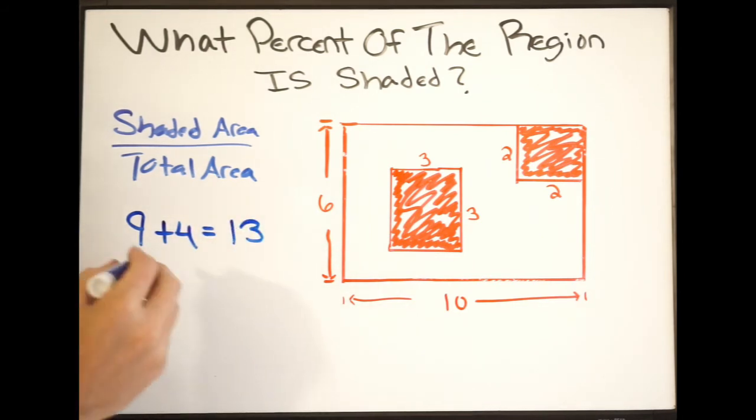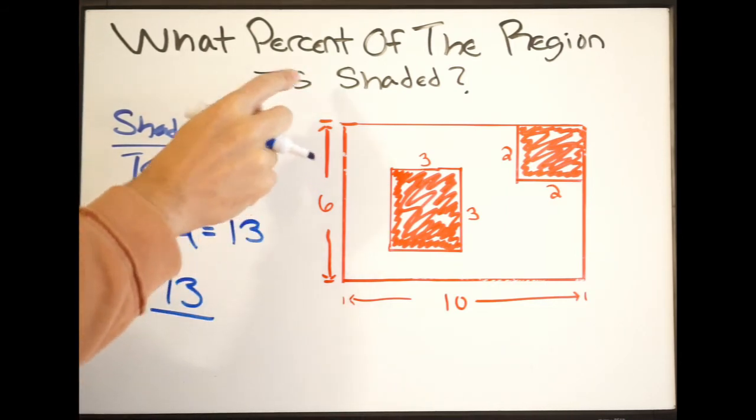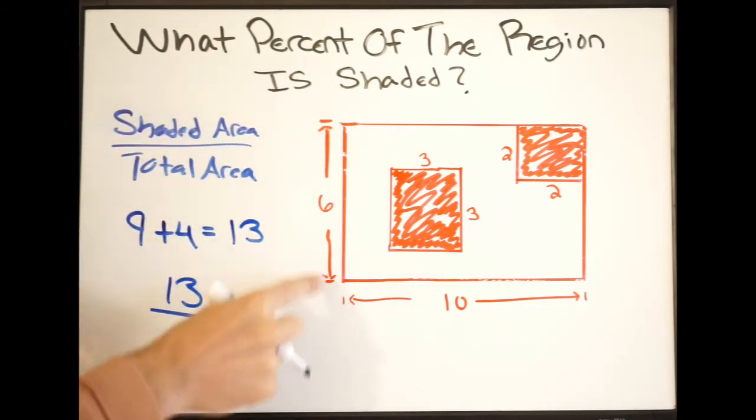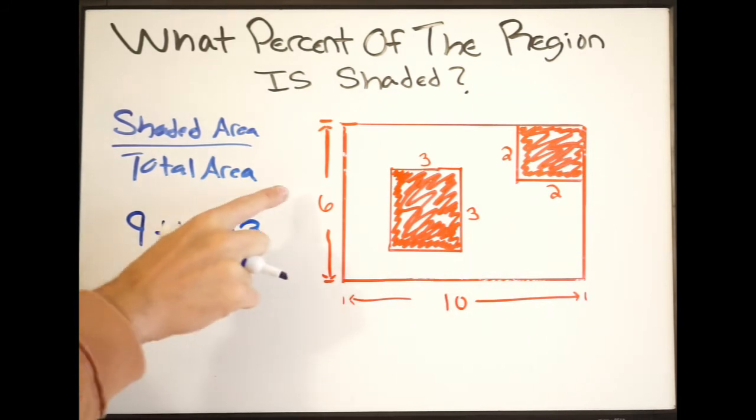So on our numerator here, we're going to have 13. And then if we look at the bigger picture, if we look at our rectangle here, that's going to be our total area. So we're going to do 6 times 10, which is 60. That's going to be on our denominator.